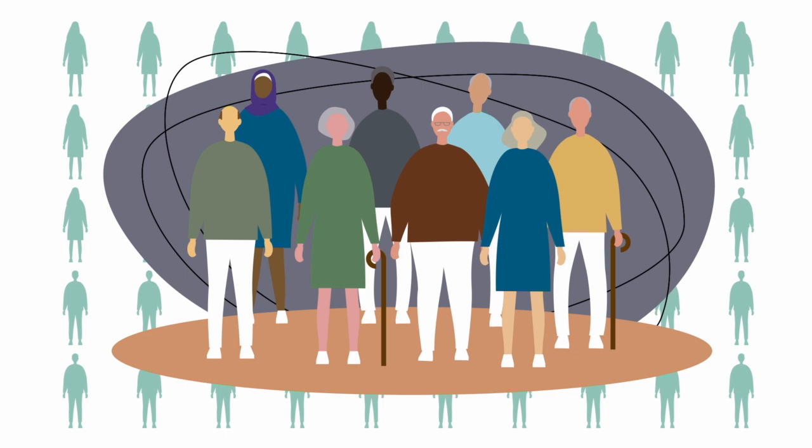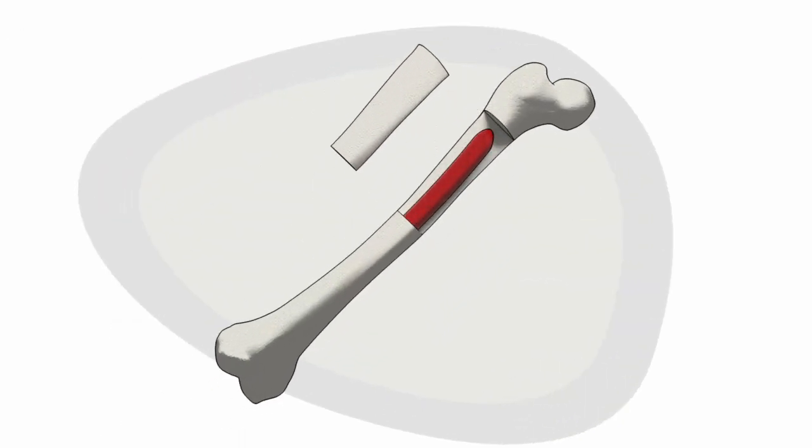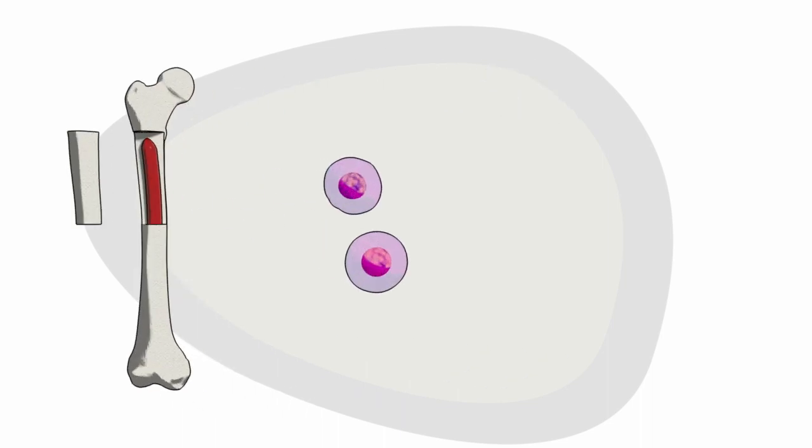AML is a type of blood cancer that starts in the bone marrow, the soft inner part of the bone where stem and blood cells are formed.